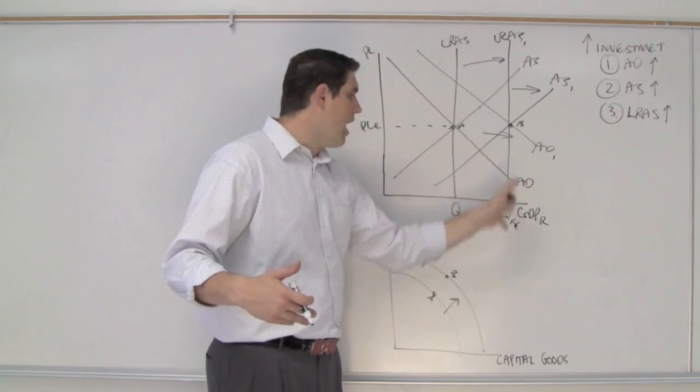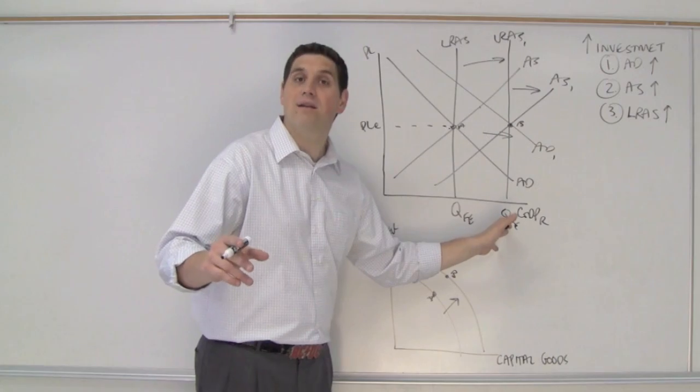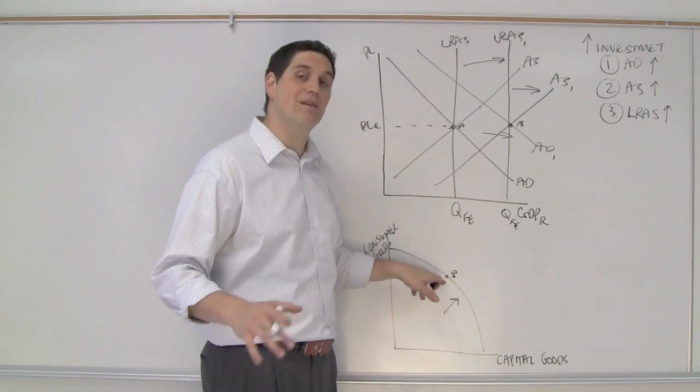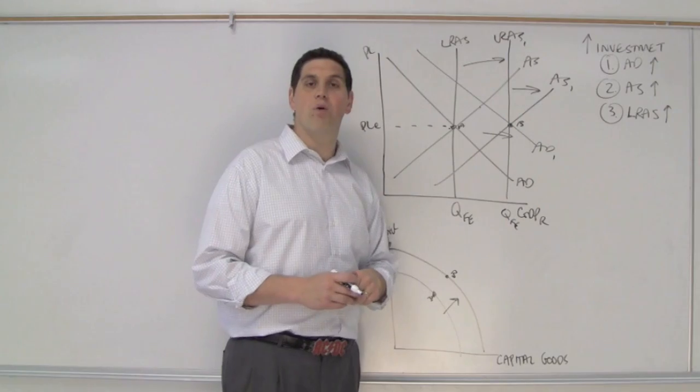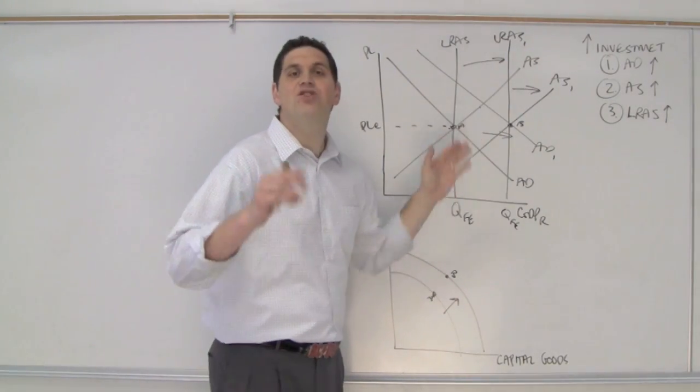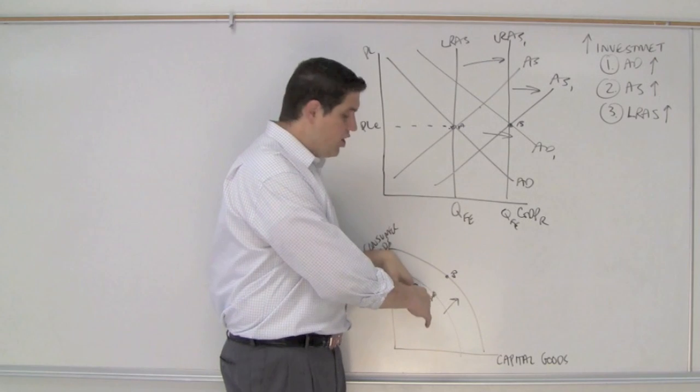We couldn't maintain a GDP that's out here. But when we have more machines, more capital, we can actually get to somewhere that was unattainable, and now that's our full employment. The concept of the long run aggregate supply shifting to the right is just the same as the production possibilities curve shifting out.